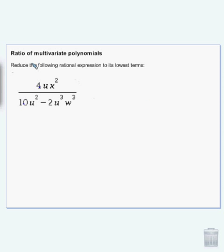Okay, we're going to discuss ratio of multivariate polynomials. This is in chapter 5. Multivariate just means having more than one variable.